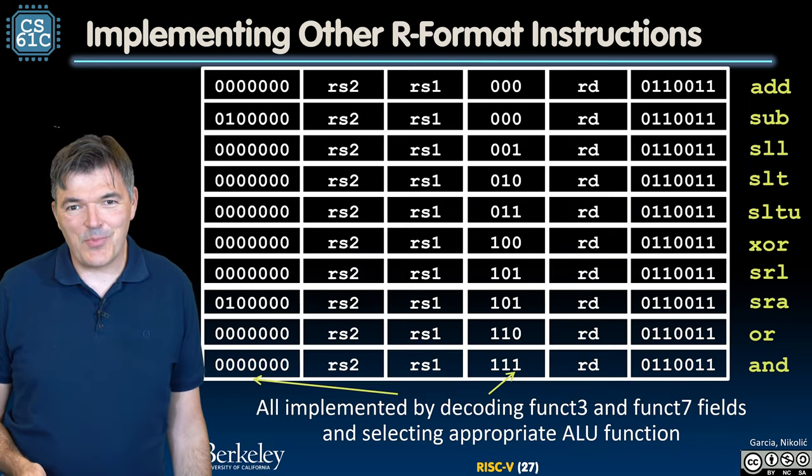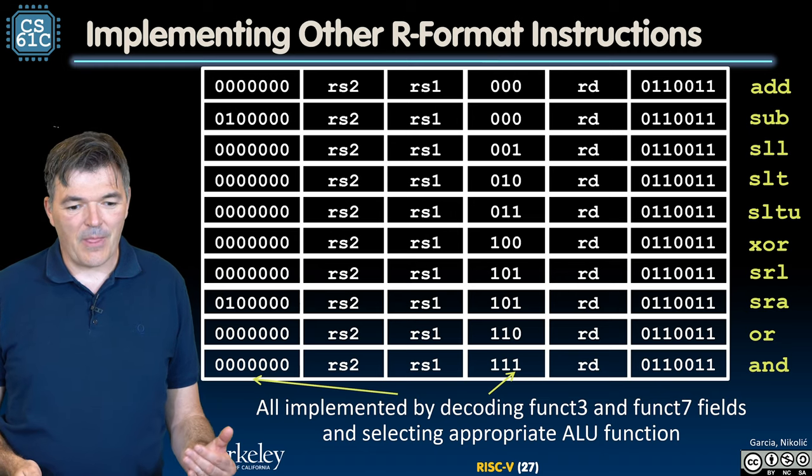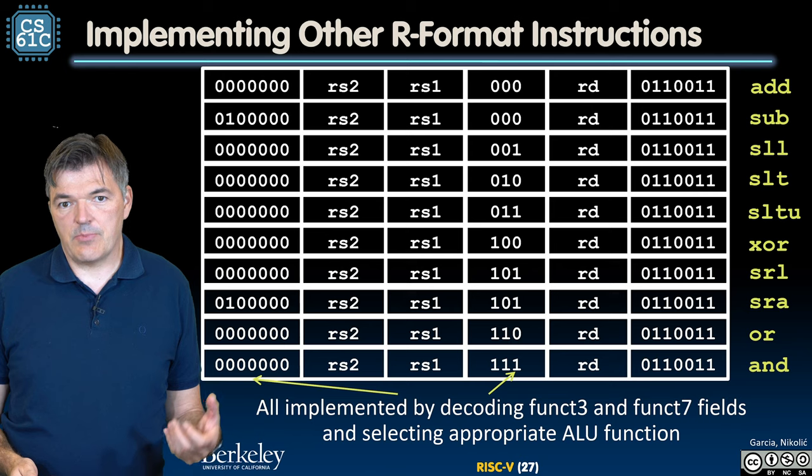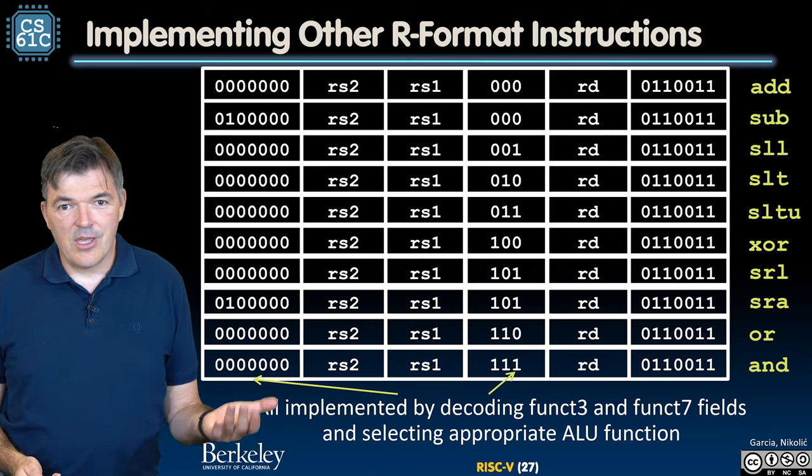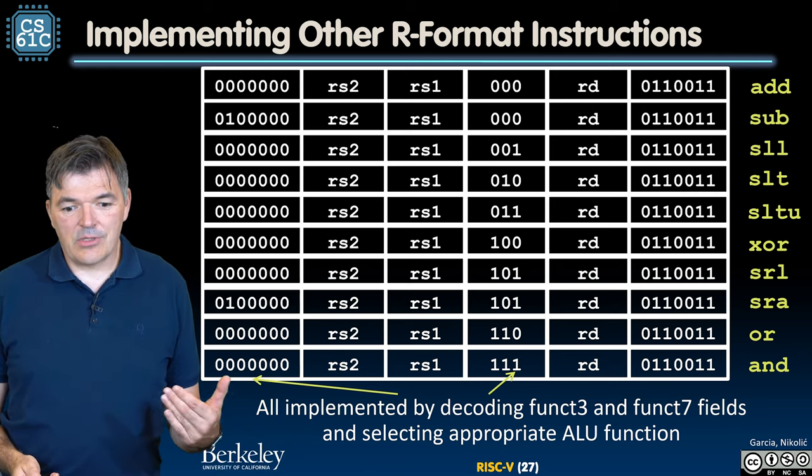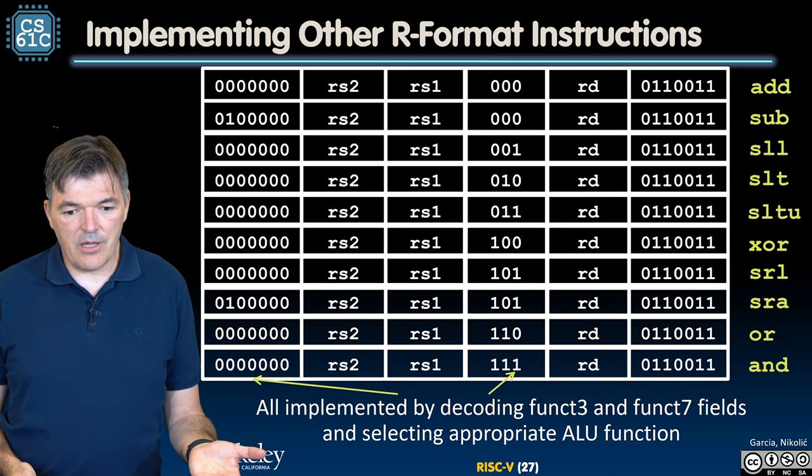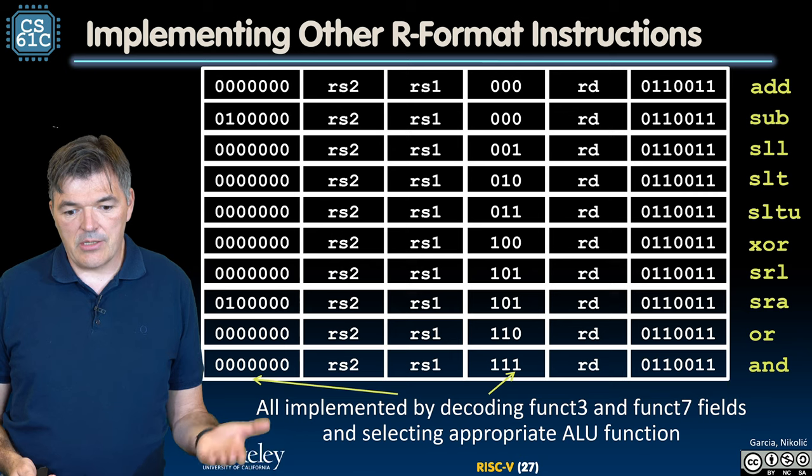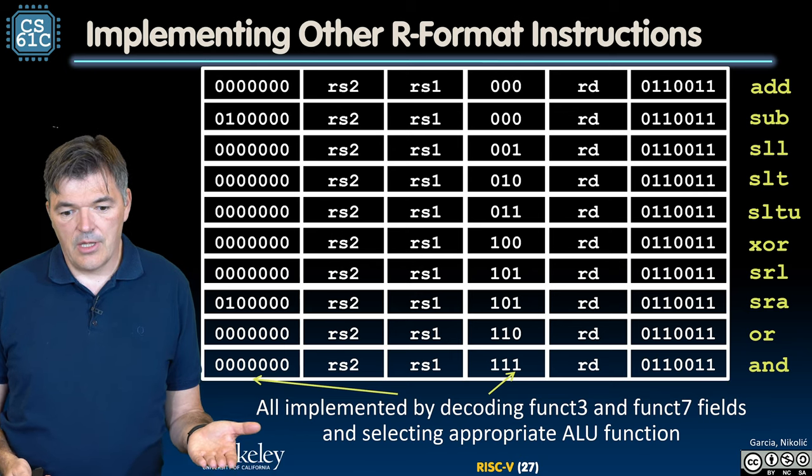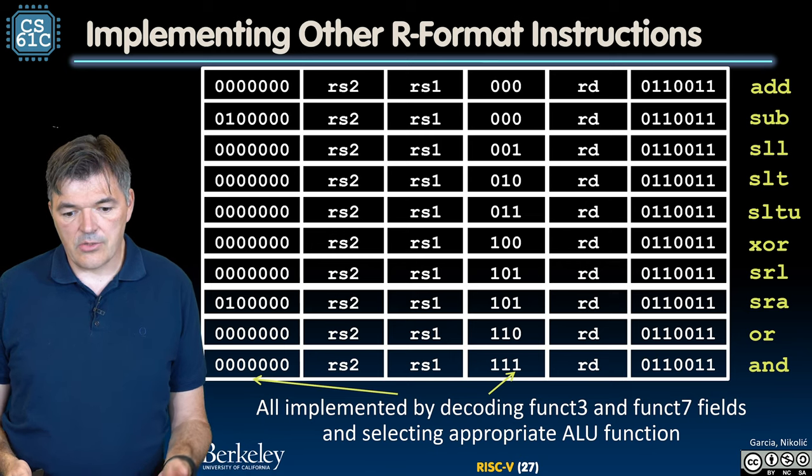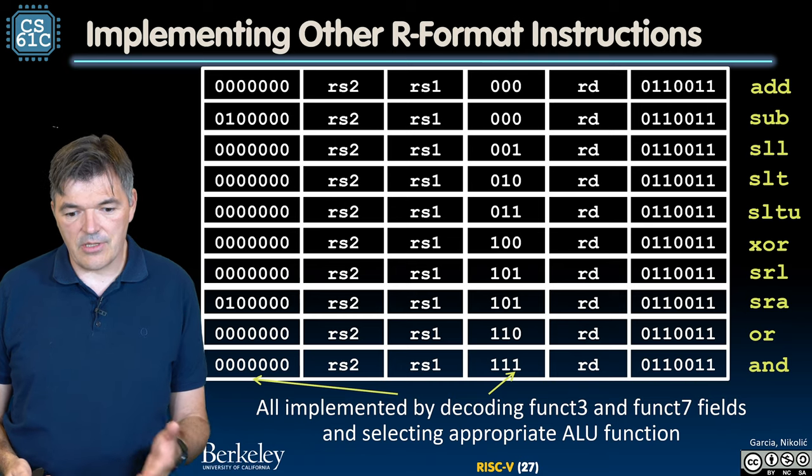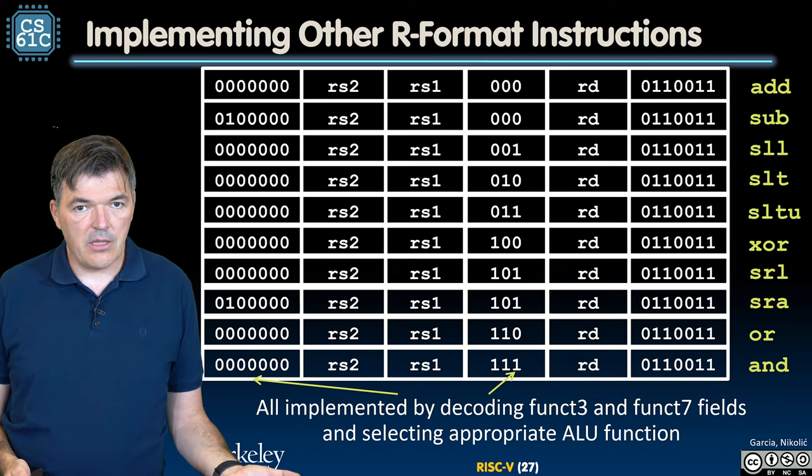Well, we can go one step beyond from that. We can implement all the other R-format instructions just by having a capable arithmetic logic unit. So this ALU now needs to support all the instructions that we have of the R-format, which are add, sub, shift left logical, set less than, set less than unsigned, XOR, shift right logical, shift right arithmetic, OR, and AND. That's it.